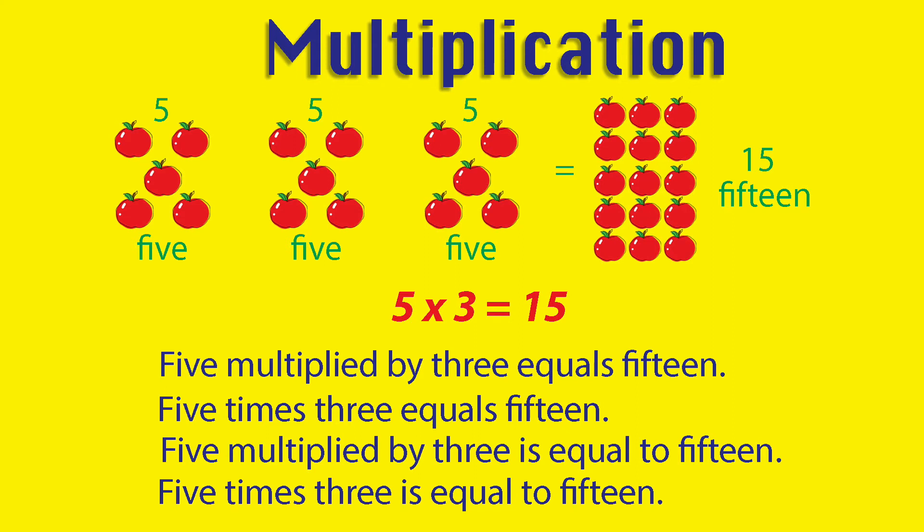Multiplication: 5 multiplied by 3 equals 15. 5 times 3 equals 15. 5 multiplied by 3 is equal to 15. 5 times 3 is equal to 15.